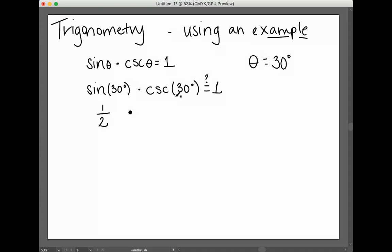I also know that cosecant is the reciprocal of sine. So the sine of 30 is a half. The cosecant is two over one, since those are reciprocals.